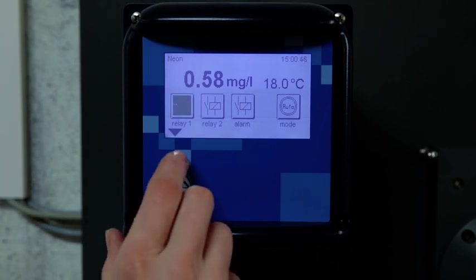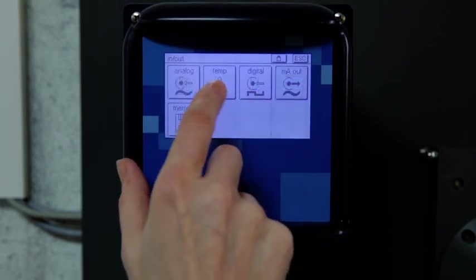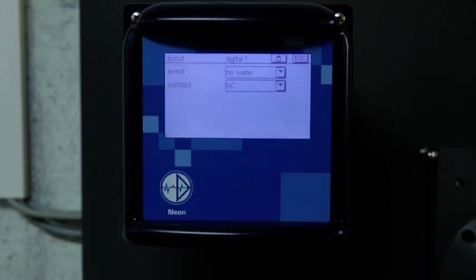With Krypton systems, the first digital input is used for flow control. That means, without sufficient water flow, the input switches and the instrument shuts off the controller, since the instrument cannot get reliable measured values without flow.